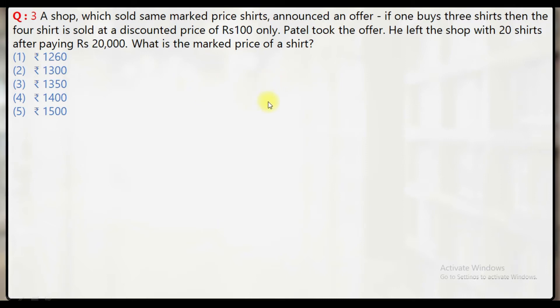He purchased 20 shirts. So he must have asked for 15 shirts at full price, and the remaining 5 shirts he will get at a discount of Rs.100 each.